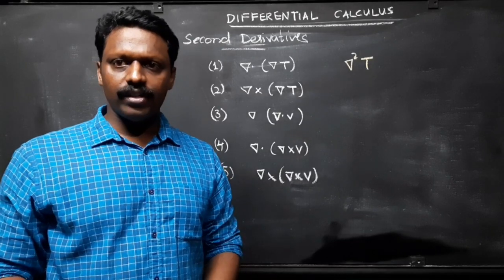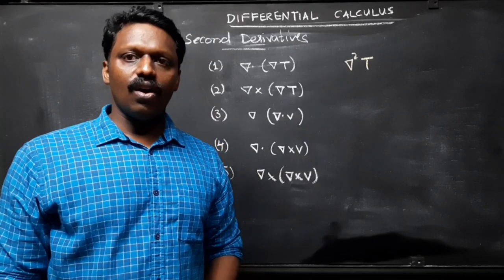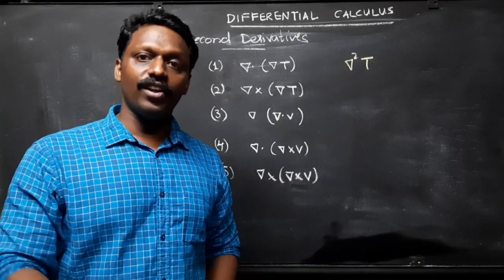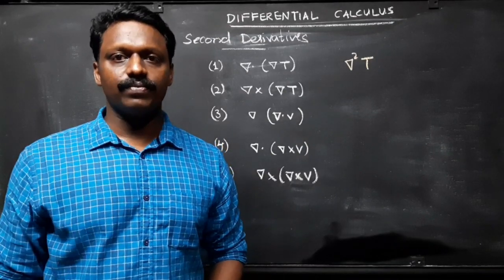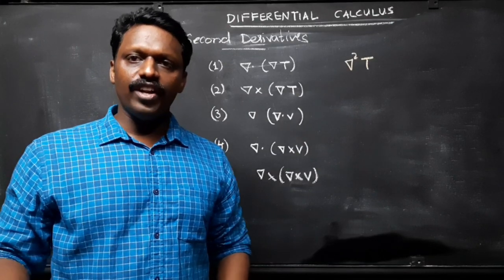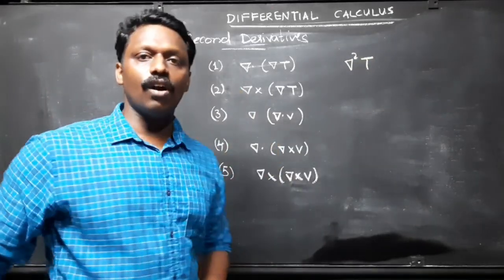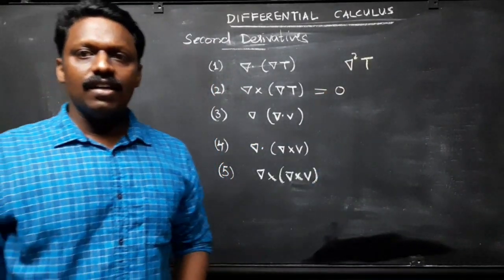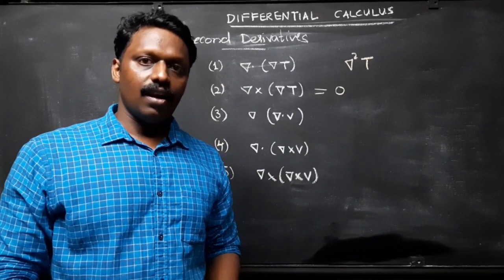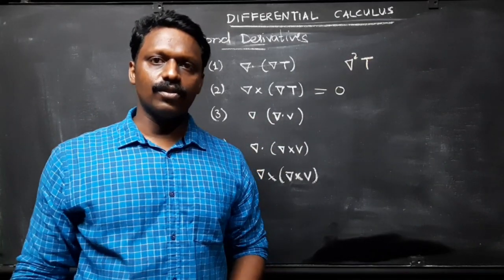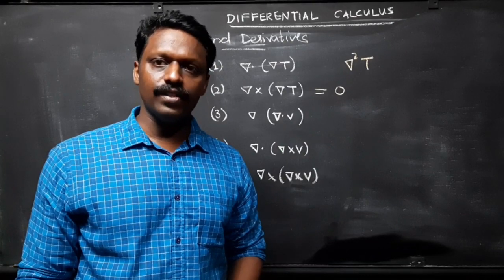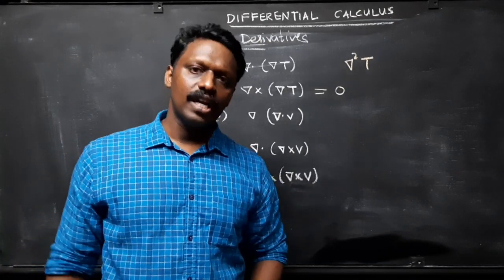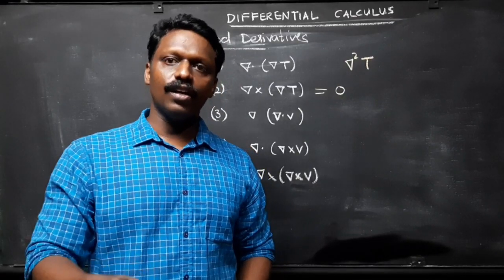Notice that the Laplacian of a scalar T is a scalar itself. Occasionally, we shall speak of the Laplacian of a vector ∇²v. By this, we mean a vector quantity whose x-component is the Laplacian of vₓ, and so on. This is nothing more than a convenient extension of the meaning of ∇². Now, the curl of a gradient is always zero. The gradient of divergence is not of much application in physics and engineering areas, so there is no specific name given to it. And the fourth one, the divergence of a curl, like the curl of a gradient, is always zero.